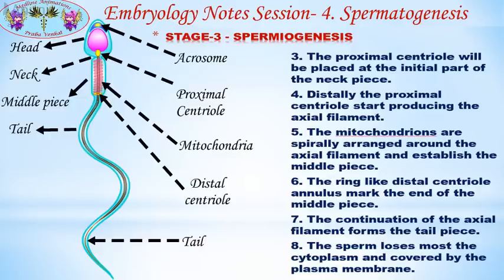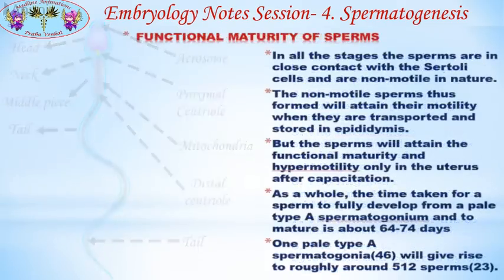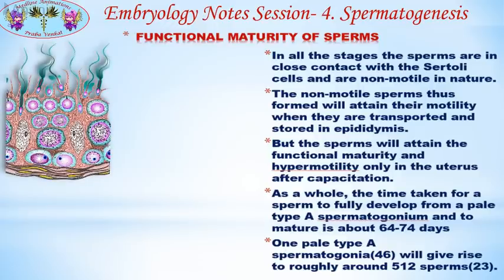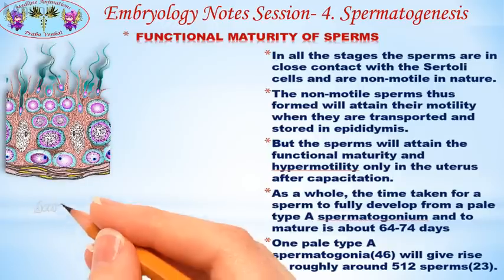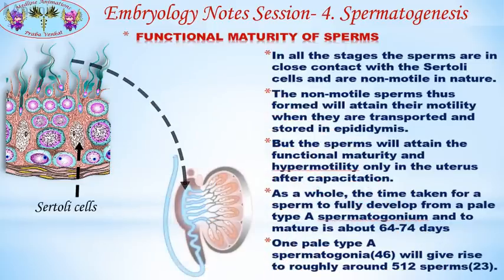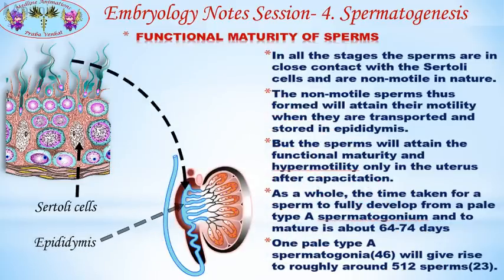Finally, the sperm loses most of its cytoplasm and is covered by the plasma membrane. Throughout all stages, the sperms are in close contact with the Sertoli cells and are non-motile in nature. The non-motile sperms thus formed attain their motility when transported and stored in the epididymis. However, sperms attain functional maturity and hypermotility only in the uterus after capacitation.